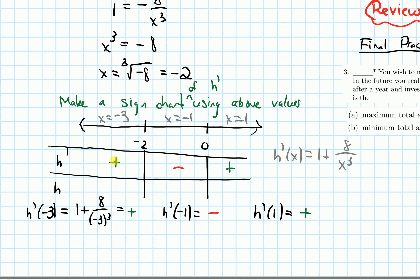When the derivative is positive, the original function is increasing. When the derivative is negative, the original function is decreasing. So the function is increasing on the two outer intervals and decreasing on the middle interval. Now let's write down our critical numbers.